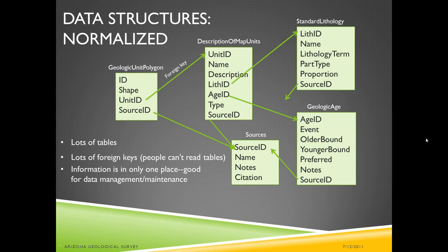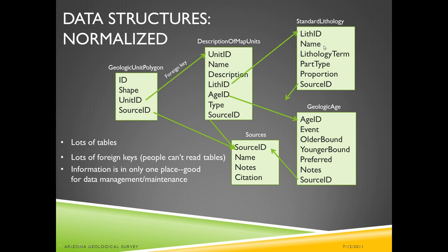At a more complex level we have more normalized databases. The idea is that in the polygons there's the identifier and geometry, and then just a foreign key that points at the unit description, and maybe another foreign key pointing at a table of sources. In the description of units table, instead of having lithology and age as text, those might actually be identifiers for records in a lithology table that has more information about the lithology. This kind of configuration allows you to represent that a map unit is composed of a variety of different rock types — constituents in the unit. It allows you to identify what kind of parts they are: is it interbedded, are they facies, are they inclusions? For those familiar with NCGMP-09, you'll recognize this as the standard lithology table in that database.